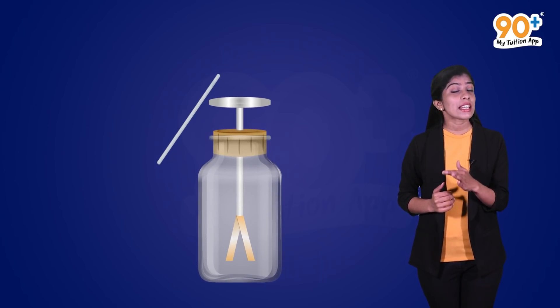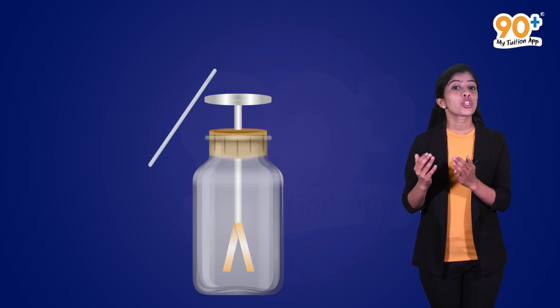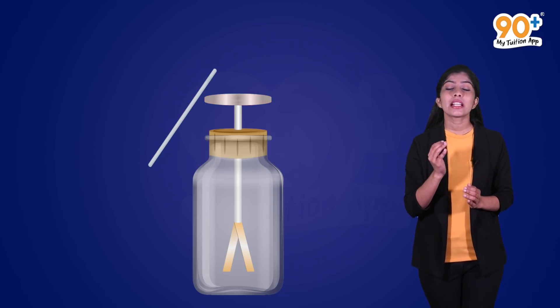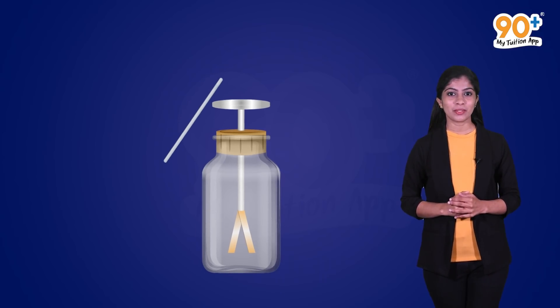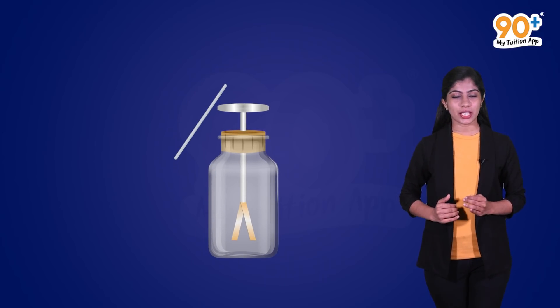To test a material like glass rod for electrification, the object should be brought in contact with the metal disc of the gold leaf electroscope. The contact should be momentary.